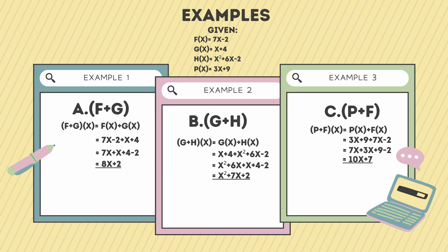Here are the examples. The given are: f(x) = 7x − 2, g(x) = x + 4, h(x) = x² + 6x − 2, and p(x) = 3x + 9. Example 1: (f + g). The solution: (f + g)(x) = f(x) + g(x) = 7x − 2 + x + 4 = 7x + x + 4 − 2 = 8x + 2.